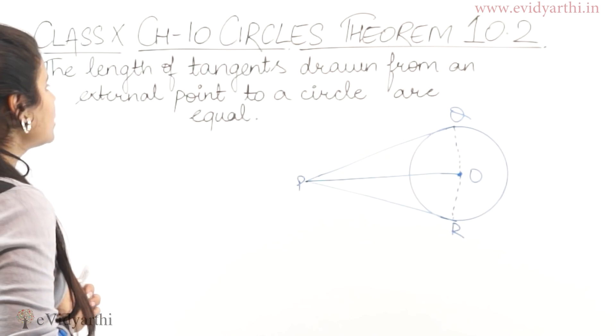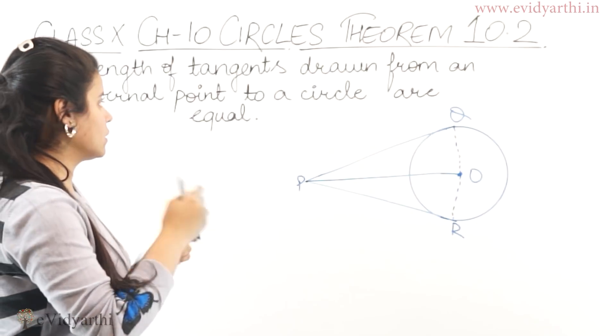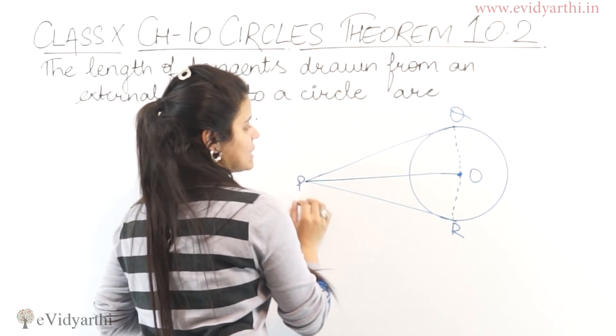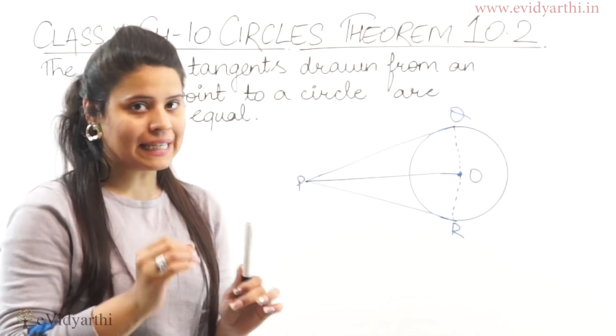The theorem says the length of tangents drawn from an external point to a circle are equal. If we are going to draw tangents from an external point to a circle, then those two tangents are equal.